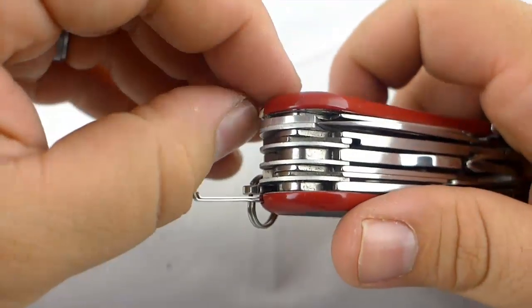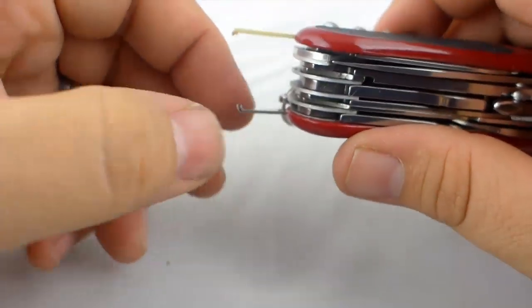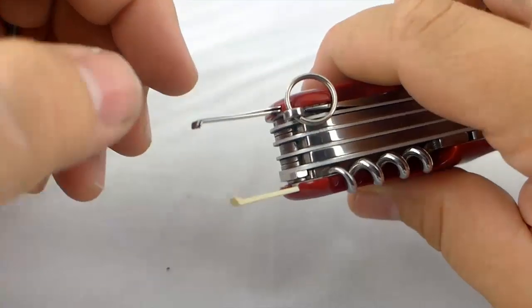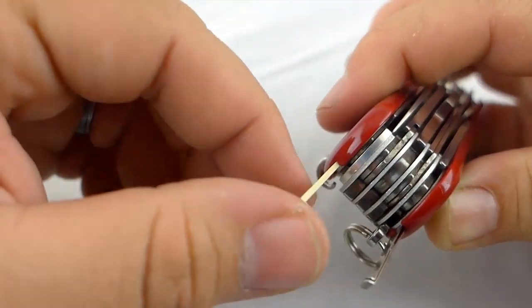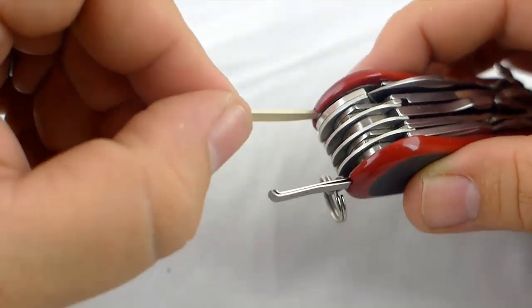And they do their toothpick and tweezers a little differently than Victorinox. They're actually along the inside of the scales.